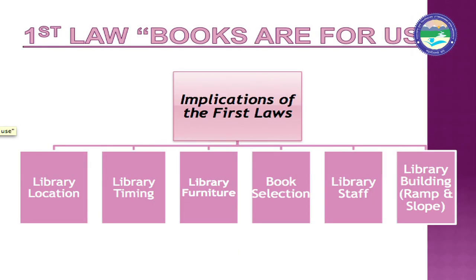The first law is: Books are for use. This law mainly emphasizes access-related issues — how books can be used and how to reach users. Let's first talk about library location. For an academic or university library, the library should be centrally located so any user can find services available to them.